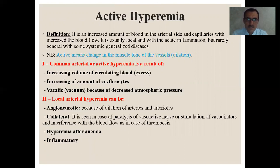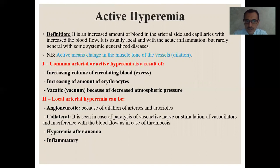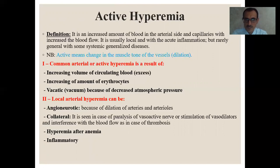Active hyperemia means changing the muscle tone of the vessels — dilation. Common arterial or active hyperemia is a result of increasing volume of circulating blood, increasing amount of red blood cells. Vacatic is termed from vacuum because of decreased atmospheric pressure. Local arterial hyperemia can be angioneurotic because of dilation of arteries and arterioles. Collateral is seen in case of release of vasoactive nerve or stimulation of vasodilators, and interference with blood flow as in thrombosis. Hyperemia after anemia and inflammatory hyperemia.